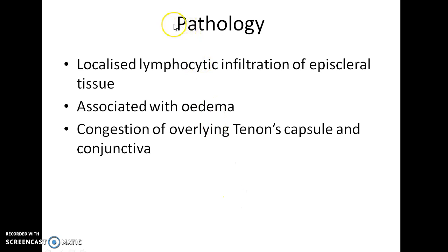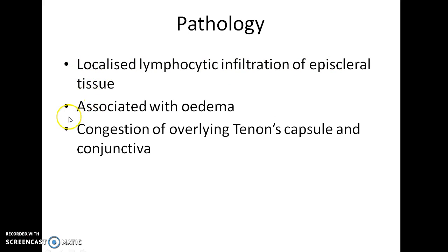Now let us see about the pathology of Episcleritis. In Episcleritis, three important things occur: there is localized lymphocytic infiltration of episcleral tissue, there is associated edema, and there is congestion of the overlying Tenon's capsule and conjunctiva.